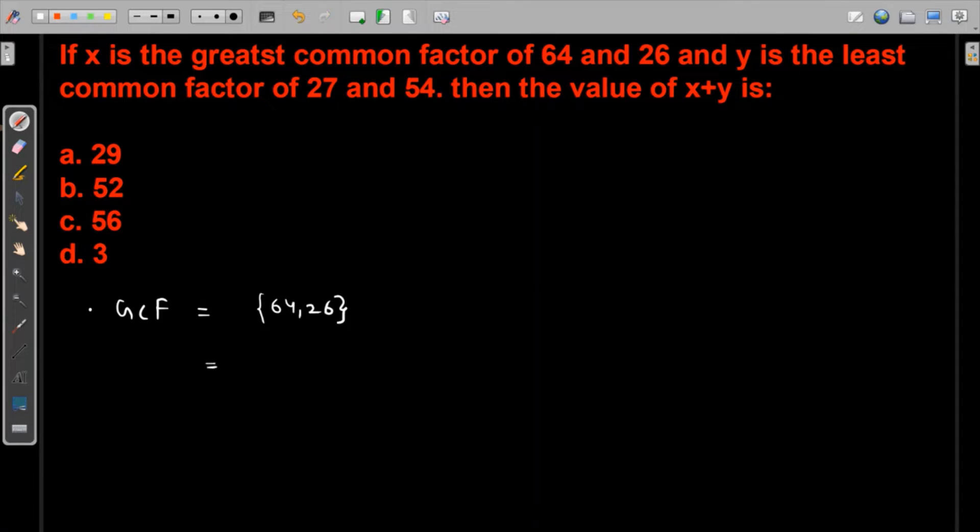26 is the only possible factor which seems is 2 times 13, because 13 is a prime number. And likewise 64, if we write in such a way that 2 also comes, then it will be 2 times 32.